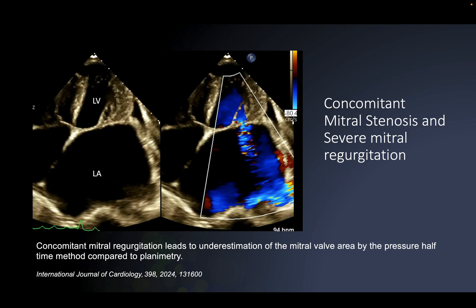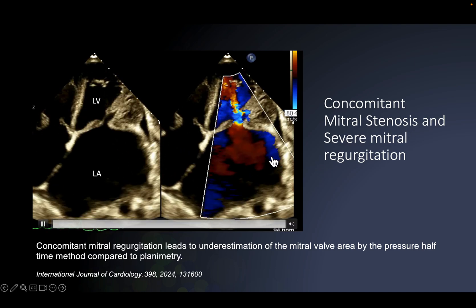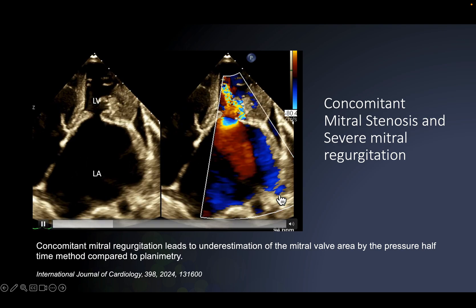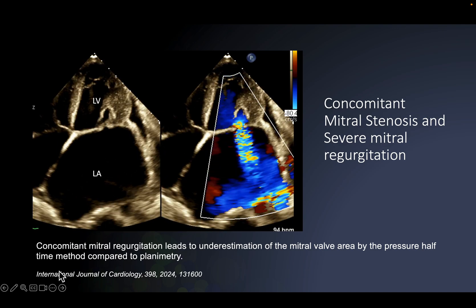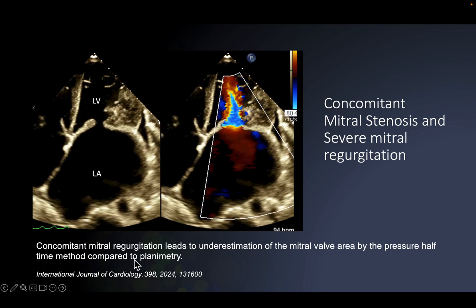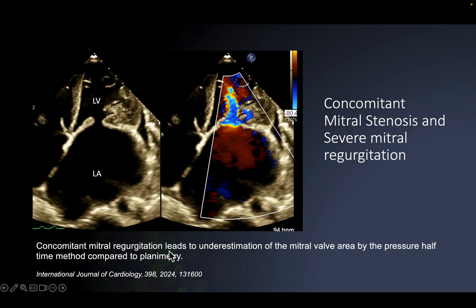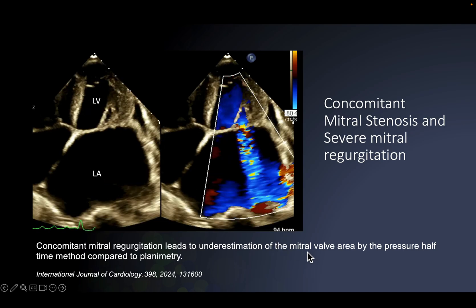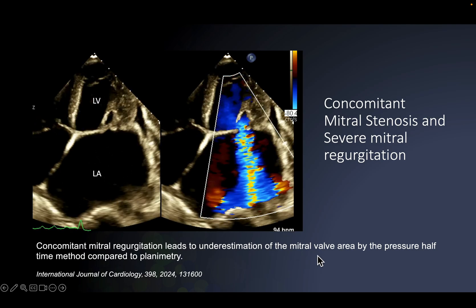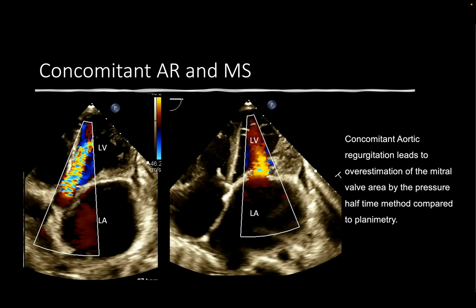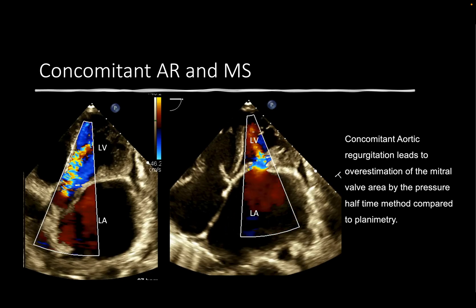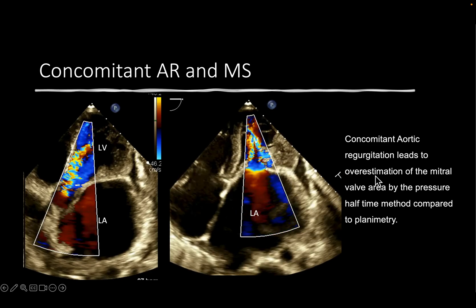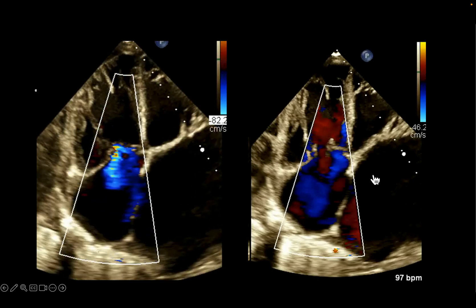As in this case, we had severe mitral regurgitation entering the pulmonary veins and encircling the left atrium. We have a recent 2024 publication showing that concomitant mitral regurgitation leads to underestimation of the mitral valve area by pressure half time. This study included 72 patients. Concomitant aortic regurgitation also leads to overestimation of the mitral valve area.